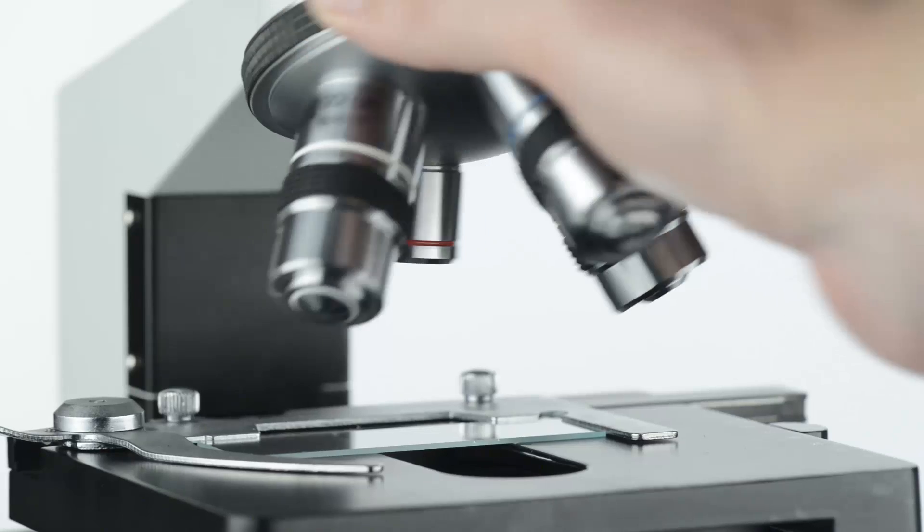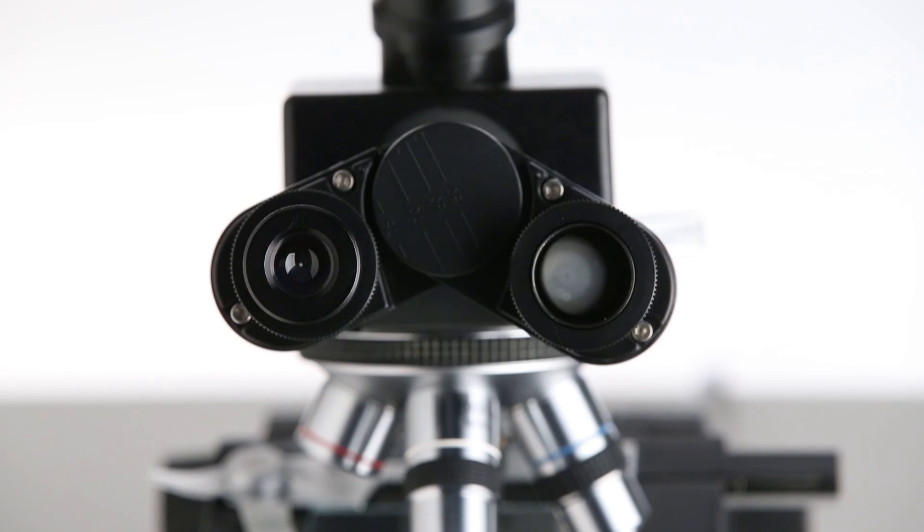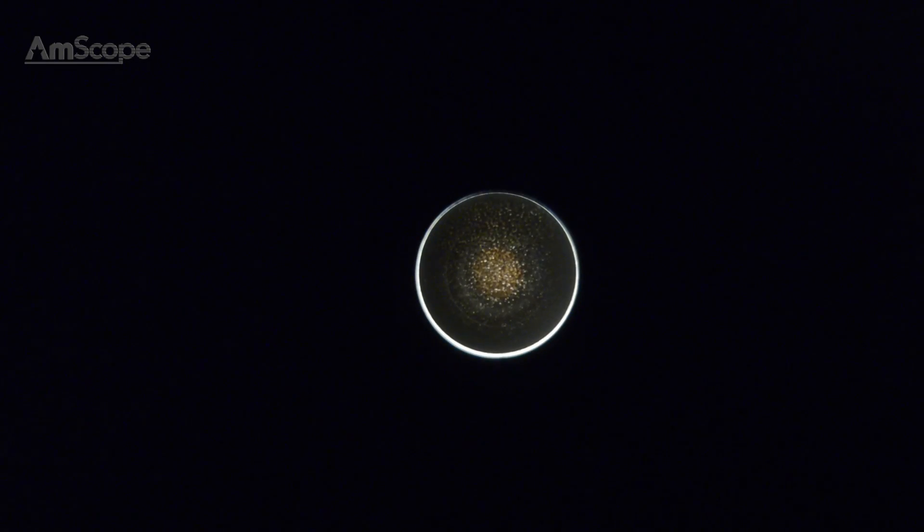For the dry condenser, use a low-powered objective, preferably at 10 times. By removing an eyepiece, an image of the condenser's lens can be seen. Adjust the height of the condenser and the stage if necessary, until the opaque disc fills slightly less than the entire image circle, leaving a ring of light. Now, use the two centering screws to move the disc until it appears centered within the ring of light.